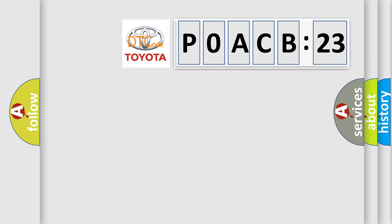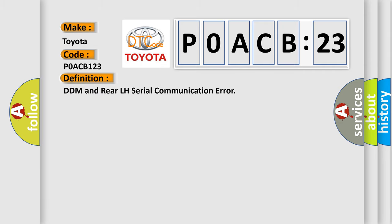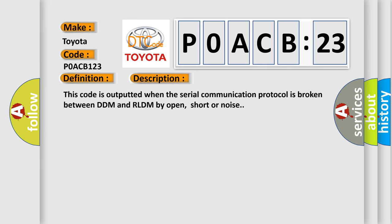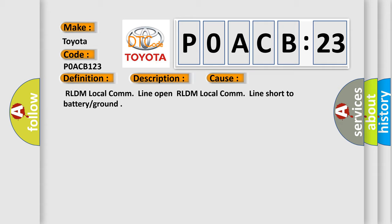So, what does the diagnostic trouble code VOACB123 interpret specifically for Toyota car manufacturers? The basic definition is: DDM and rear LH serial communication error. This code is outputted when the serial communication protocol is broken between DDM and RLDM by open, short, or noise. This diagnostic error occurs most often in these cases: RLDM local com line open, or RLDM local com line short to battery or ground.